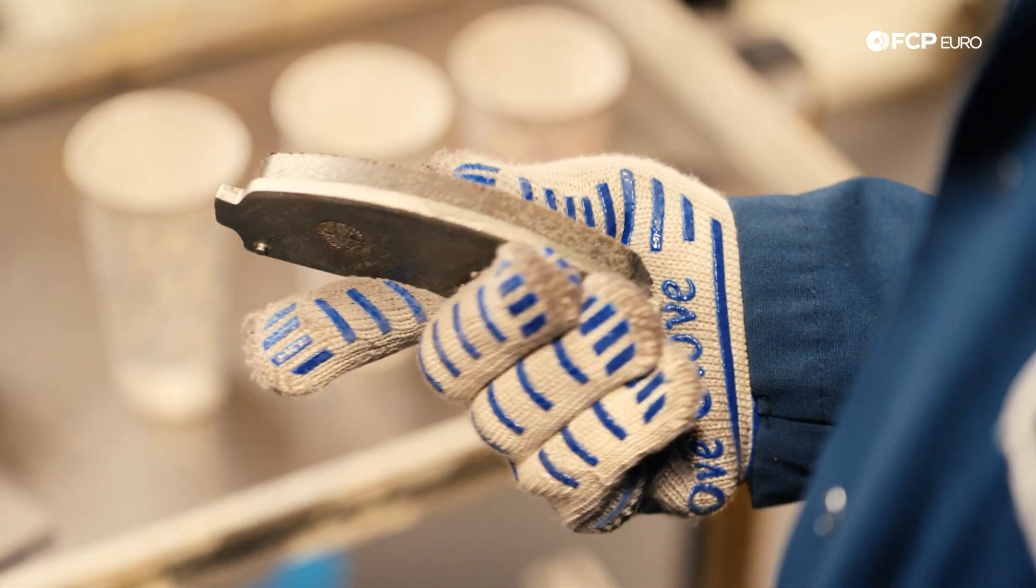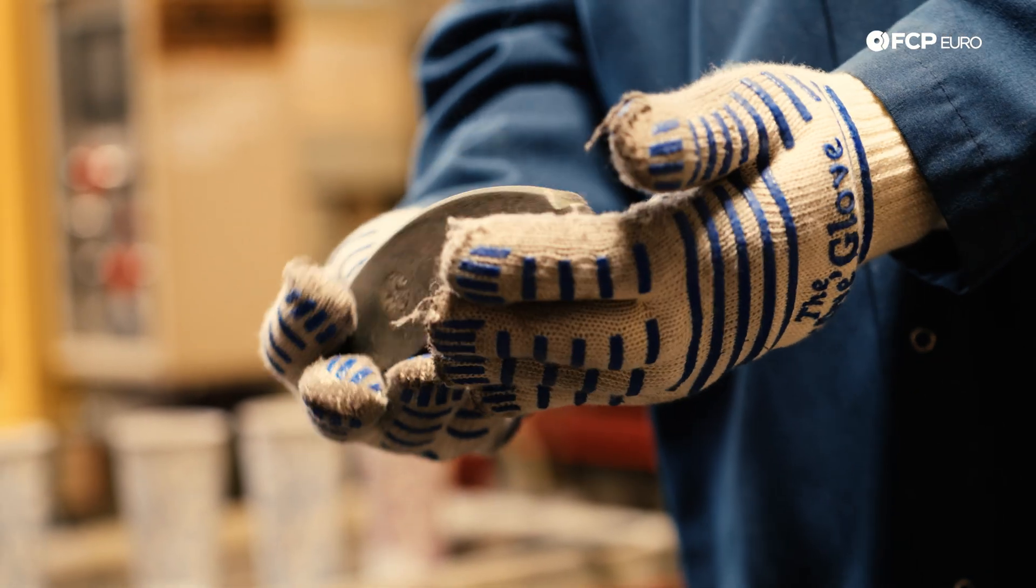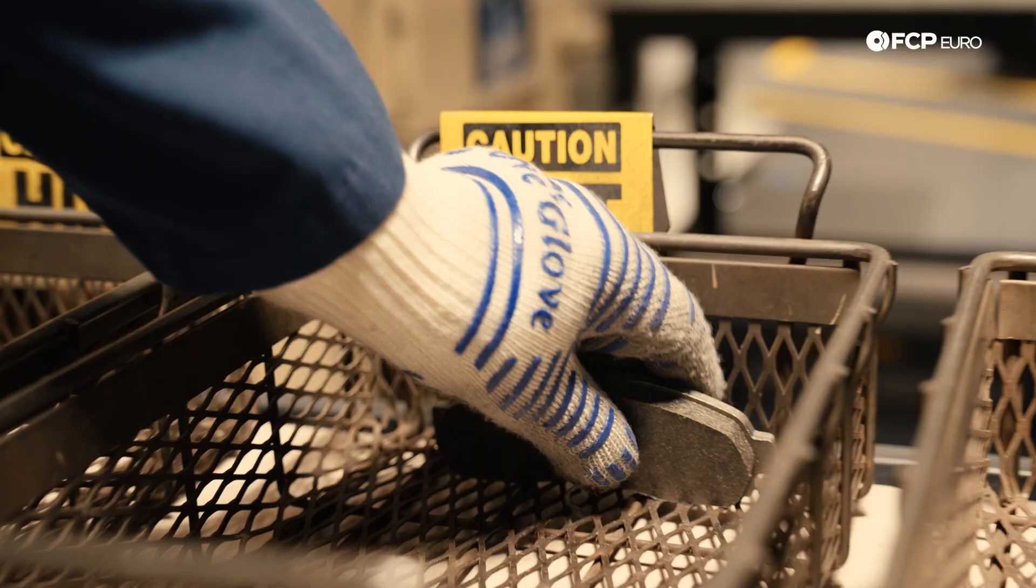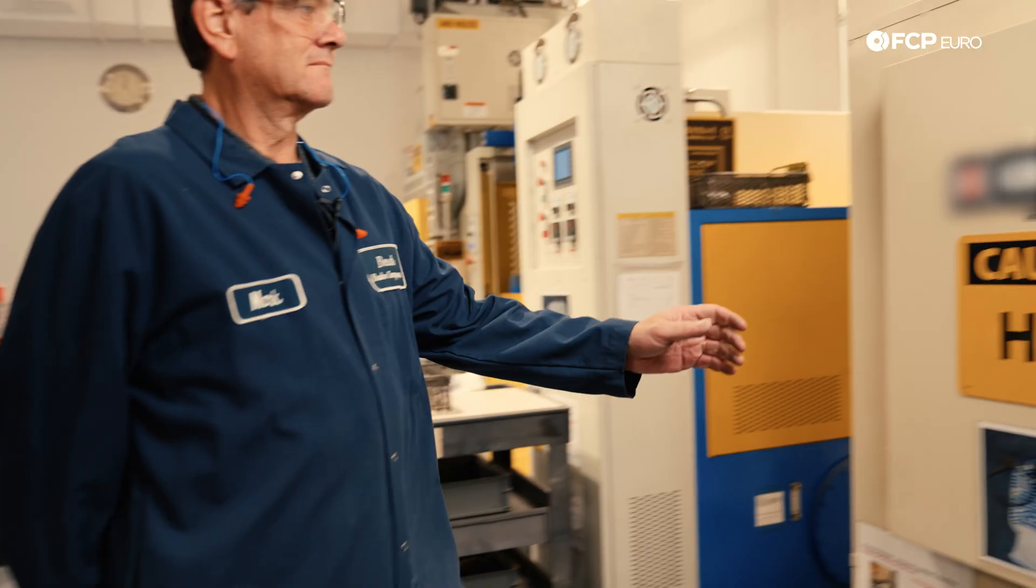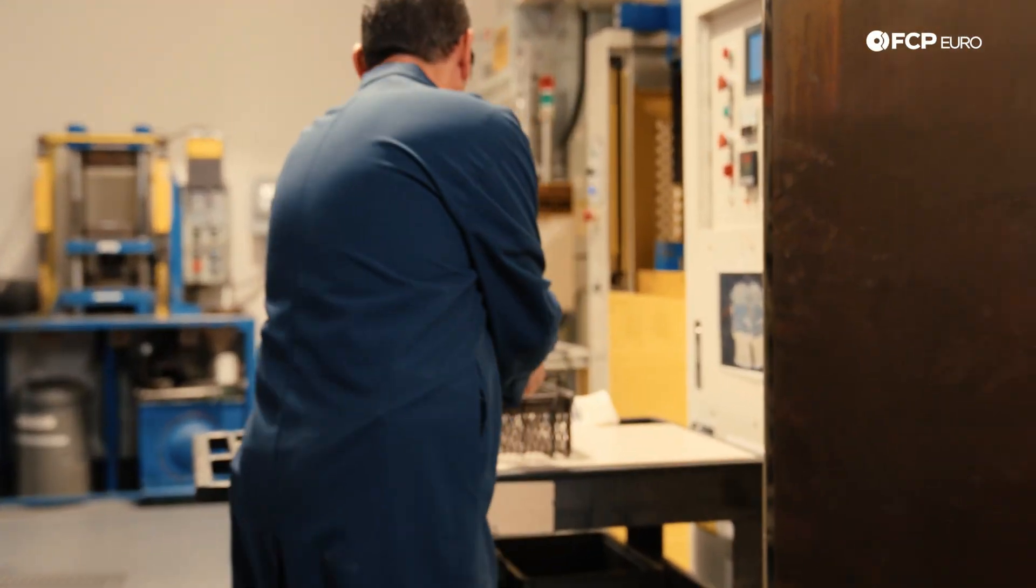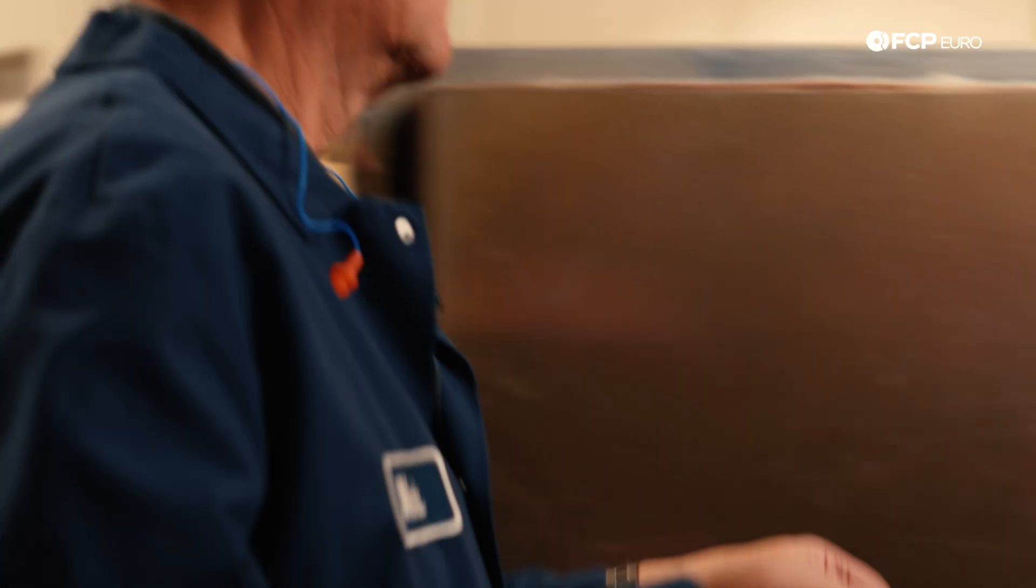Once the bonding process is complete, the pad is then visually inspected for any discrepancies. After passing its initial quality check, the pads are then placed in a cooling basket before making their way over to the final step of the curing process: the oven.